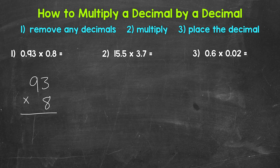Now we multiply. 8 times 3 gives us 24. And then we have 8 times 9, which is 72, plus 2 is 74. So we end up with 744.